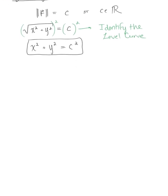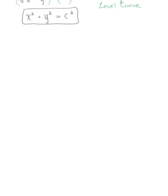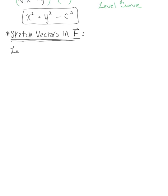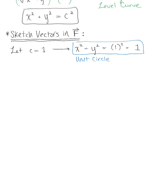Now that we have identified the level curve, we're ready to start sketching vectors in the field. We'll begin by choosing c equal to 1. Plugging this in, we get x squared plus y squared equals 1, so the level curve we're starting with is the unit circle.